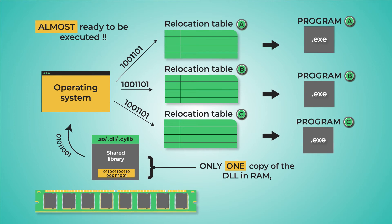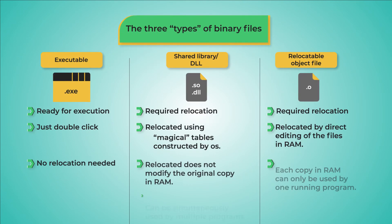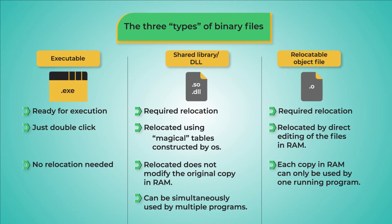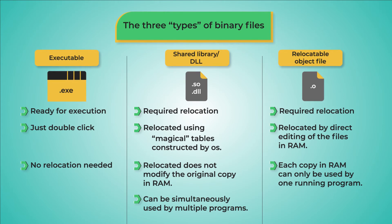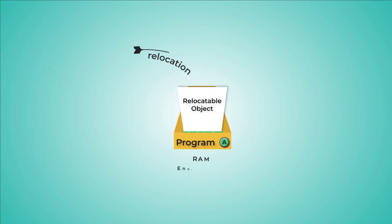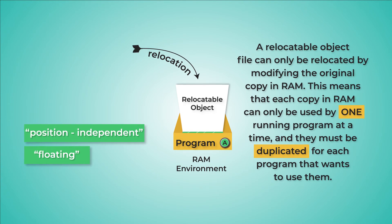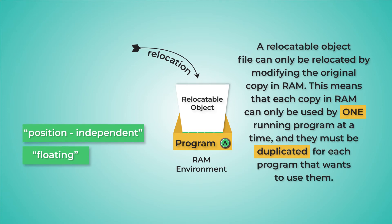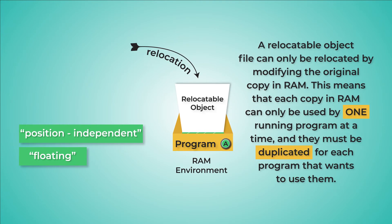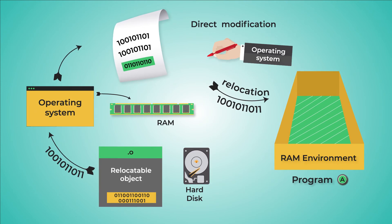The third and final major type of binary file is known as a relocatable object file, or object file for short. We acknowledge that this is a confusing name, since shared libraries also get relocated by the OS — but unfortunately this is the name given to this type of binary file. Relocatable objects are also position-independent just like shared libraries, but the way they are relocated by the OS is different. Shared libraries are relocated using a special technique that does not alter the original copy, enabling the shared library to be used by multiple programs simultaneously. Relocatable object files, however, are relocated in a faster, more efficient way that modifies the original copy, which means relocatable objects in RAM can only be used by one program at a time.